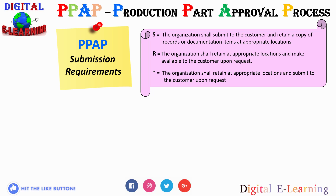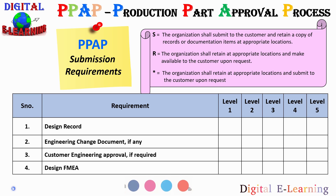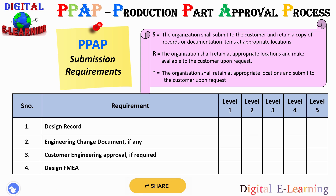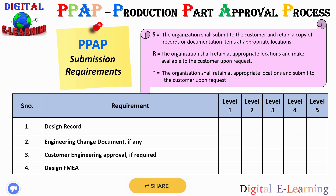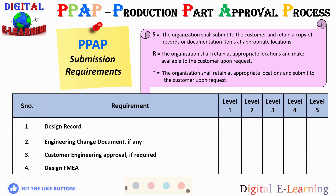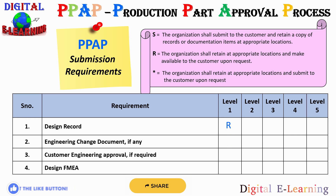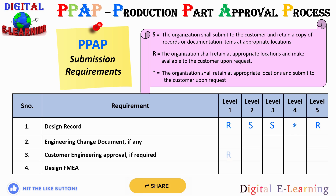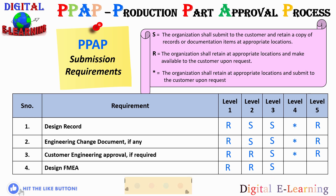Let us look at the order of the PPAP submission requirements. I have listed down all 18 elements of PPAP and will indicate which is required at what level. I have denoted three indications: S, which denotes that the organization shall submit to the customer and retain a copy of records or documentation items at the appropriate location; R, which denotes that the organization shall retain at an appropriate location and make it available to the customer upon request. For example, for level one, the design record is R; for levels two and three it is S; and so on. You can pause this video to look at what is required at what level.